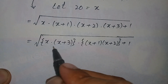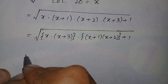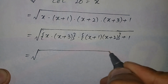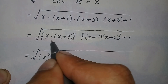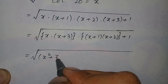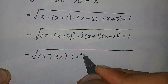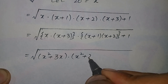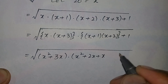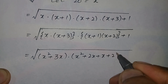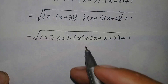Now multiply these two pairs of terms inside the brackets. x times (x+3) gives x² + 3x. And (x+1) times (x+2) gives x² + 2x + x + 2, which is x² + 3x + 2. So the expression becomes square root of (x² + 3x)(x² + 3x + 2) + 1.